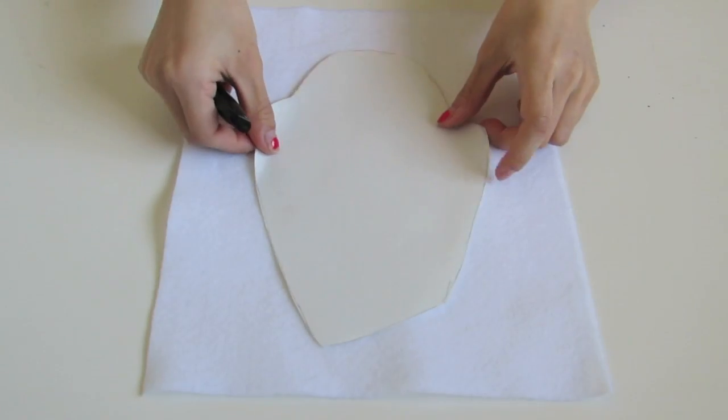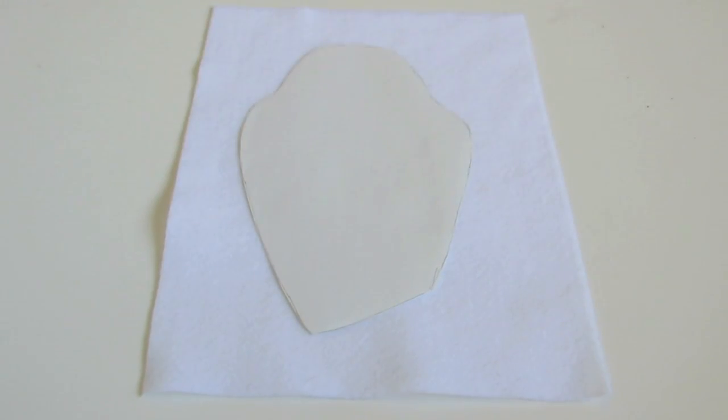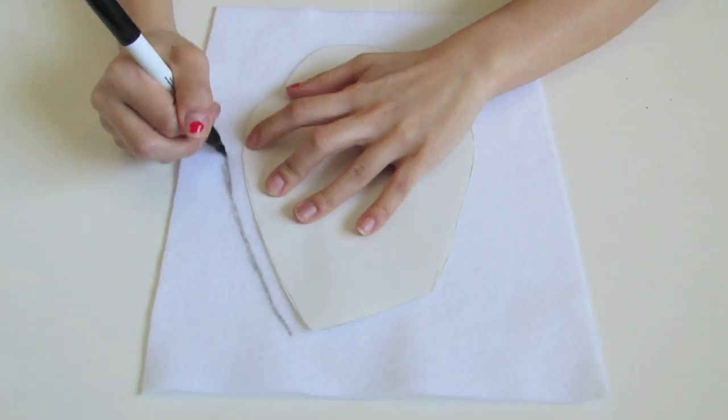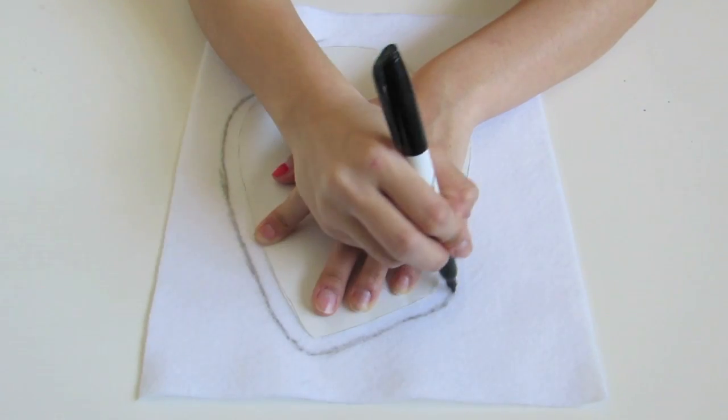Alright, so once you're done, just put your stencil on top of the felt fabric and you want to trace and leave about half an inch of space.